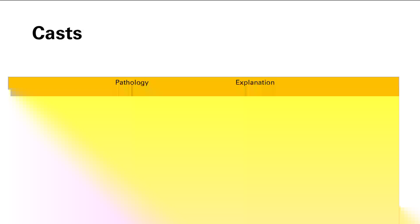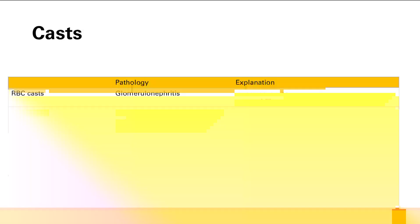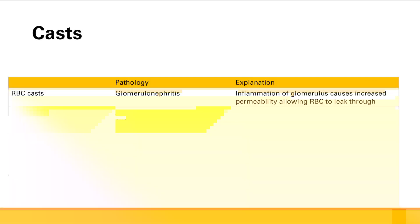Red blood cell casts are going to tell you that the patient most likely has a glomerulonephritis — something like a nephritic syndrome. The reason why is the underlying pathology in nephritic syndrome: it was inflammation of the glomerulus with increased pore filtration and increased permeability from the inflammation. With inflammation, you get red blood cells leaking through, and they can eventually turn into these red blood cell casts.